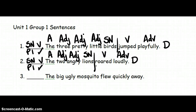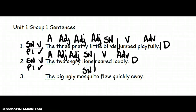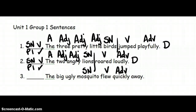Go back to the verb. Divide the complete subject from the complete predicate. And one more, just for practice. The big, ugly mosquito flew quickly away. What flew quickly away? Mosquito. Subject noun. What is being said about mosquito? Mosquito flew. Verb. Flew how? Quickly. Adverb. Flew where? Away. Adverb.